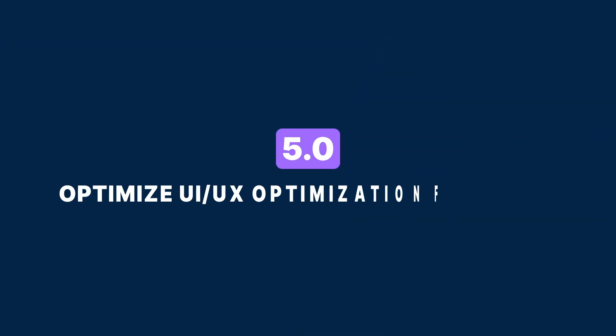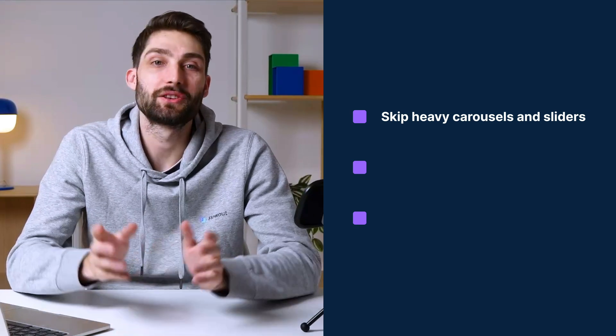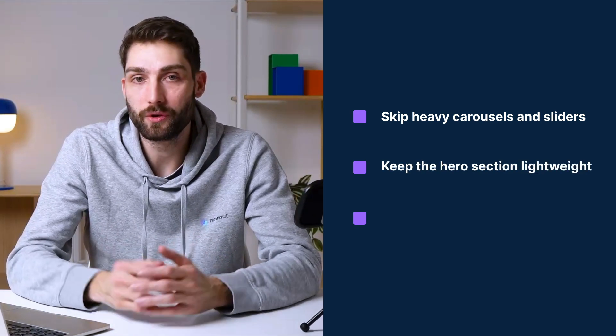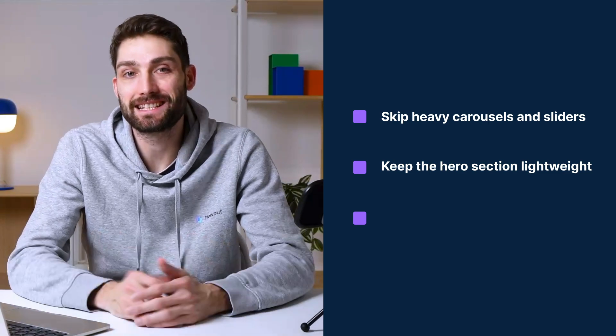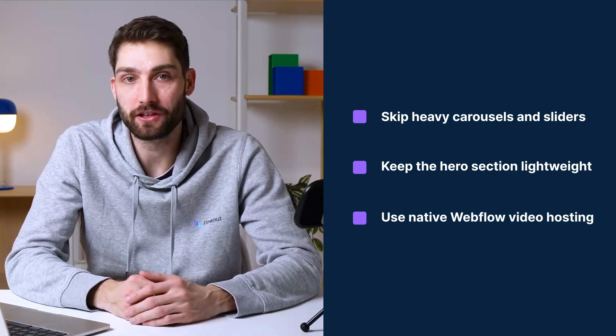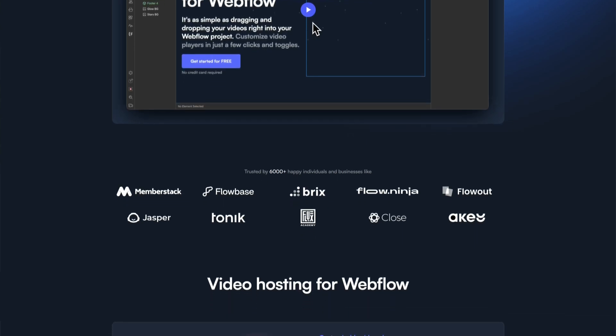Step 5 is optimize UI/UX for speed. If you implement all of these steps and your website still isn't loading as fast as you want, you can also optimize the UX and UI to improve load times. Skip heavy carousels and sliders, as they add unnecessary bulk and slow down pages. Keep the hero section lightweight — avoid 4K videos or massive animations in the first section. Use native Webflow video hosting instead of embedding YouTube or Vimeo, which slow down your site. You can also use platforms like Wistia that optimize video playback specifically for Webflow sites.